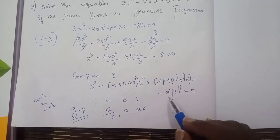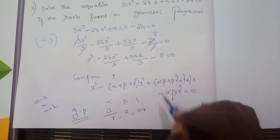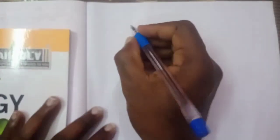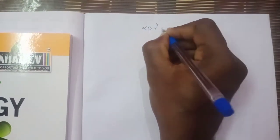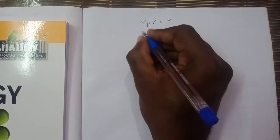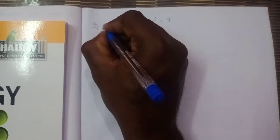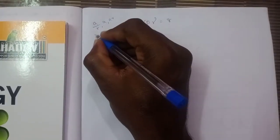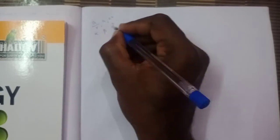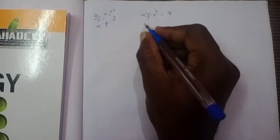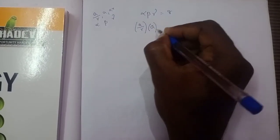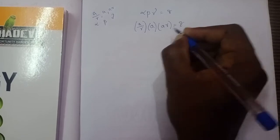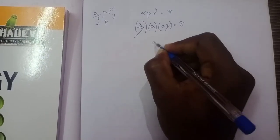Also comparing the constant term, αβγ = 8. Since αβγ = (a/r) · a · ar = a³, we have a³ = 8, so a = 2.